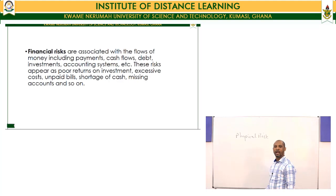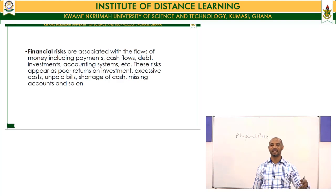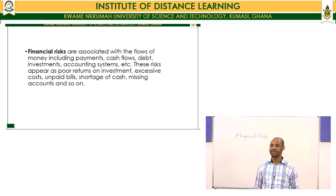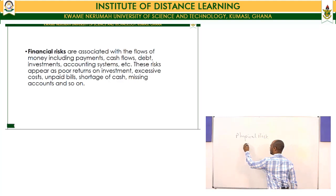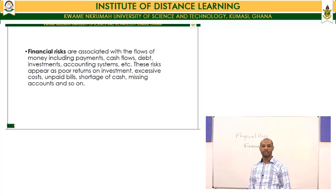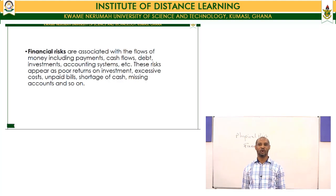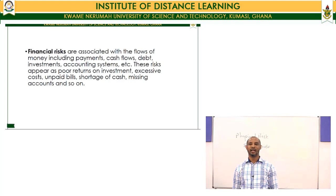Financial risks are associated with the flow of money and include payments, cash flows, debt, investments that don't yield appropriate returns, and accounting systems that don't check for leakages. Financial risks appear in the form of low return on investment, excessive costs, unpaid bills, shortage of cash, and missing accounts. These are serious risks.